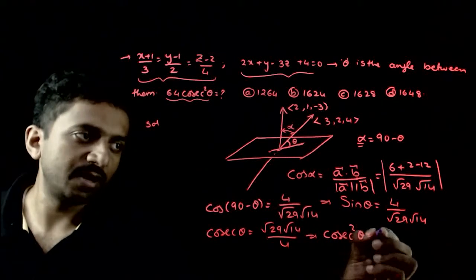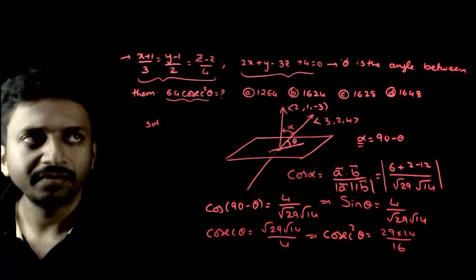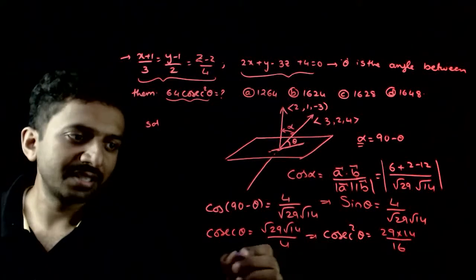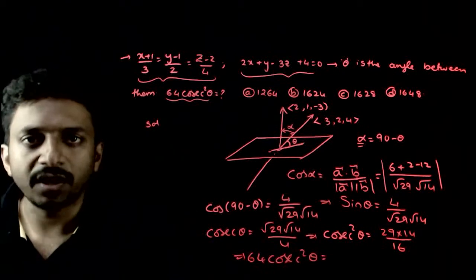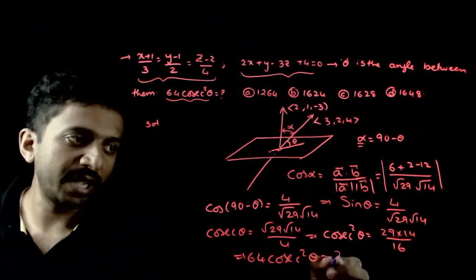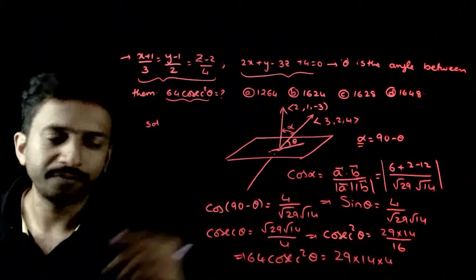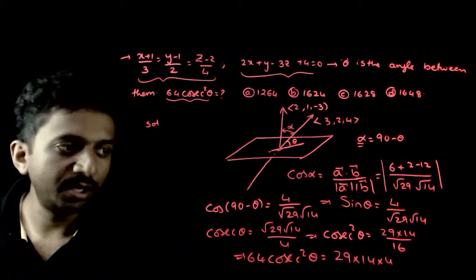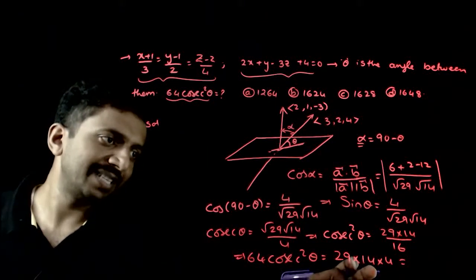Cosecant square theta is equal to 29 into 14 by 16. So, what is 64 cosecant square theta? 64 cosecant square theta is equal to 64. 16 will get cancelled. 4 upar hai ga, 29 into 14 into 4, that is equal to...